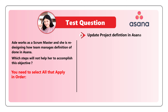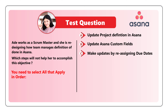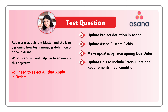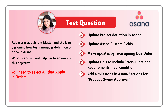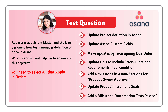Choice A: Update product definition in Asana. Choice B: Update Asana custom fields. Choice C: Make updates by redesigning due dates. Choice D: Update DOD to include non-functional requirements met condition. Choice E: Add a milestone in Asana section for product owner approval. Choice F: Update product increment goals. And Choice G: Add a milestone — automation test passed.